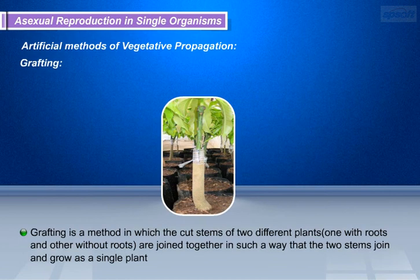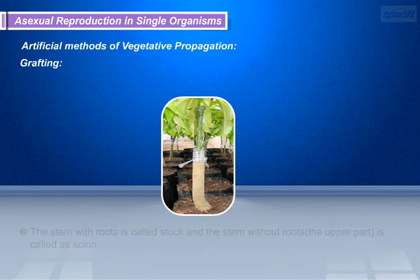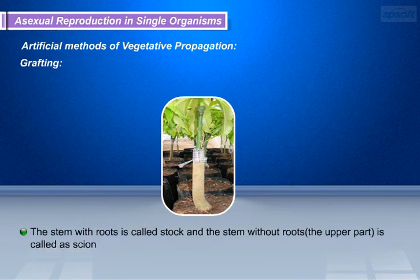Now let us study grafting. Grafting is a method in which the cut stems of two different plants — one with roots and one without roots — are joined together such that the two stems join and grow as a single plant. The stem with roots is called the stock, and the stem without roots, the upper part, is called the scion.